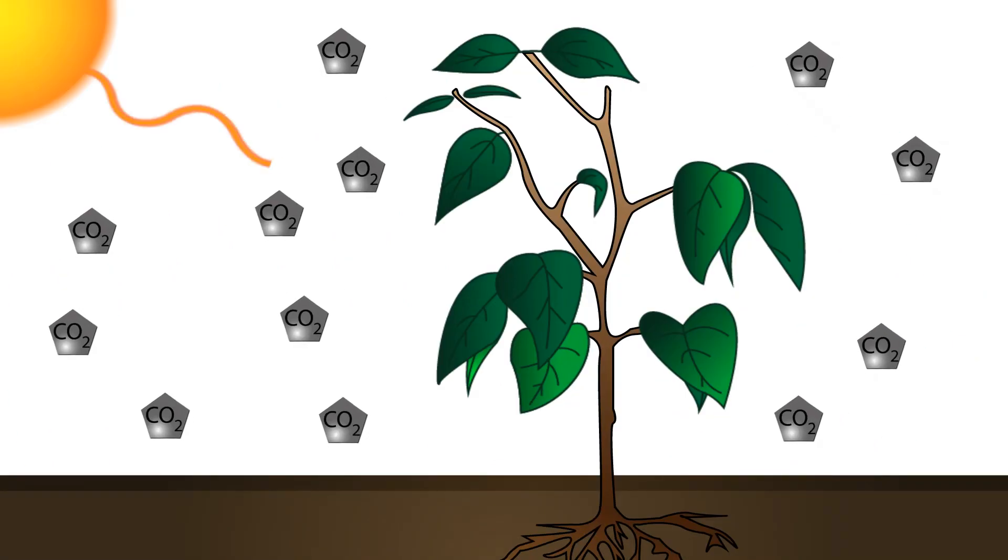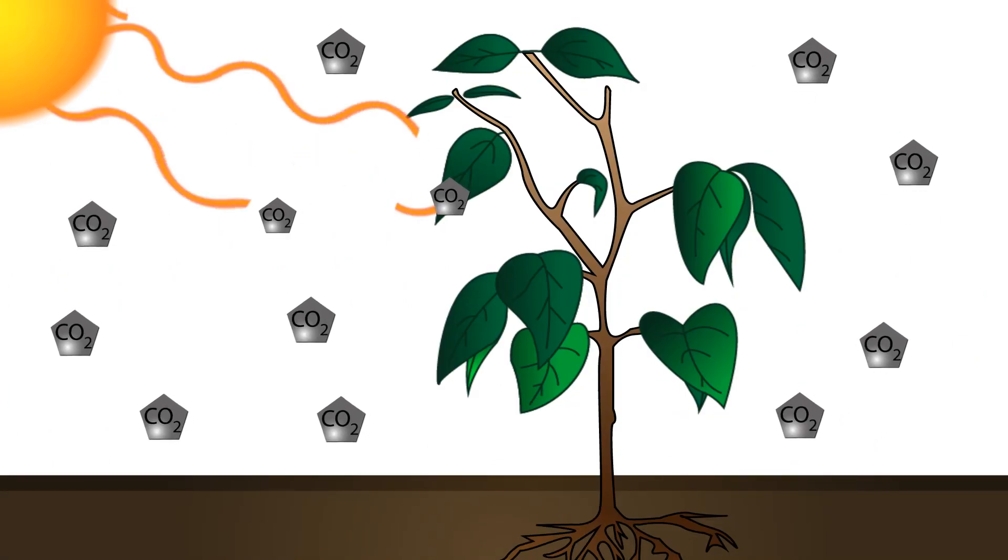But where can they find the carbon which constitutes a basic atom for all organic matter, particularly glucose which we are currently focusing on? Well, plants take this carbon in the air with the help of light.